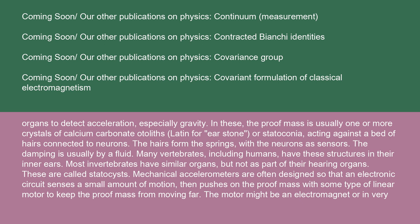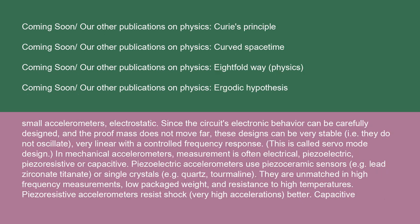Mechanical accelerometers are often designed so that an electronic circuit senses a small amount of motion, then pushes on the proof mass with some type of linear motor to keep the proof mass from moving far. The motor might be an electromagnet or, in very small accelerometers, electrostatic. Since the circuit's electronic behavior can be carefully designed and the proof mass does not move far, these designs can be very stable — they do not oscillate — and very linear with a controlled frequency response. This is called servo-mode design.